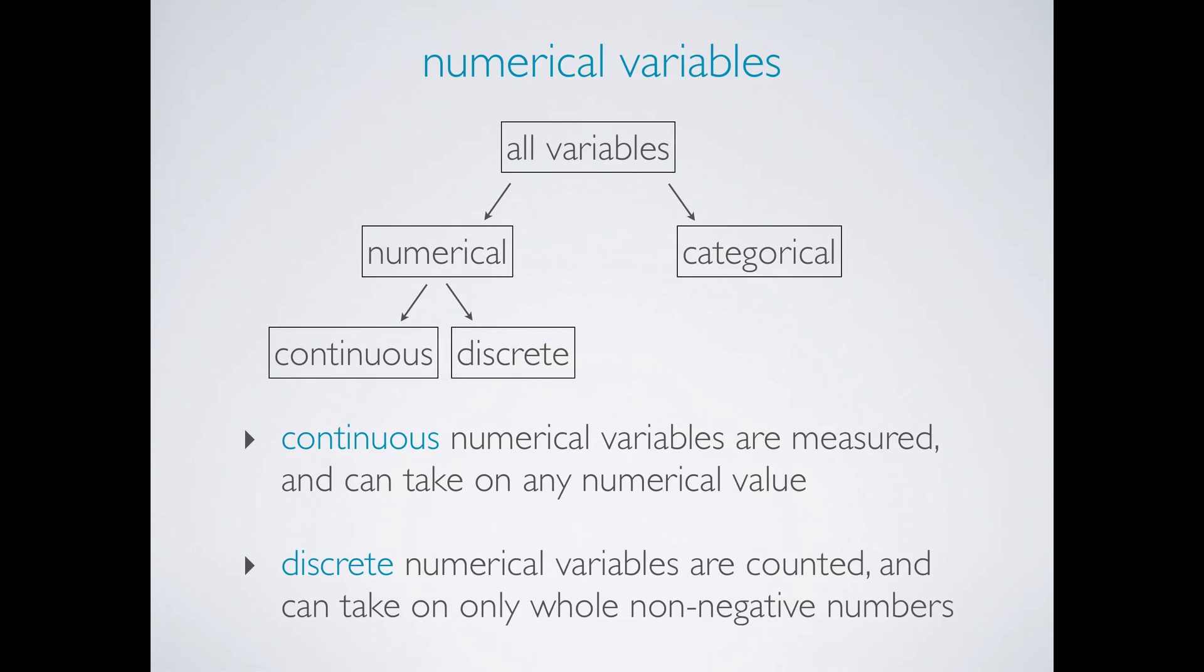Discrete numerical variables are generally counted, such as the number of cars a household owns. These can be whole, non-negative numbers. It is important to think about the nature of the variable and not just the observed values when determining if a variable is continuous or discrete, as rounding of continuous variables can make them appear to be discrete.